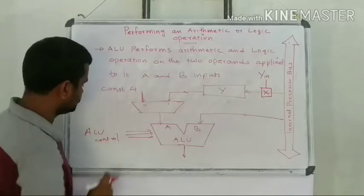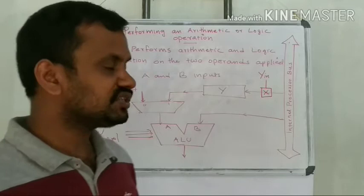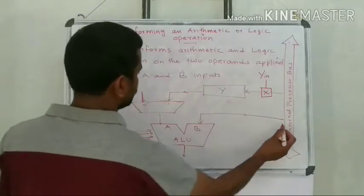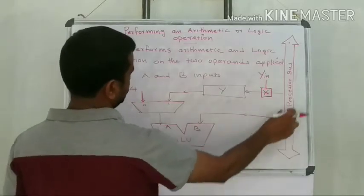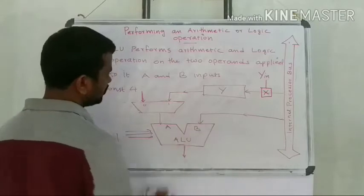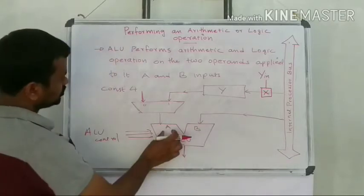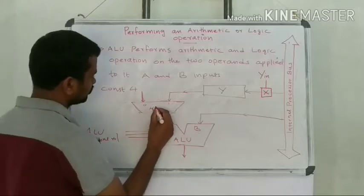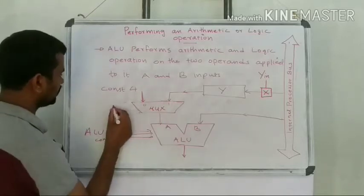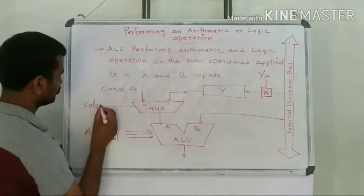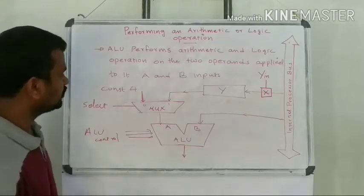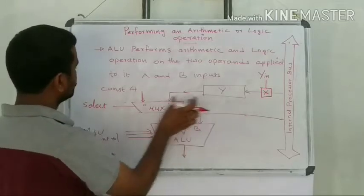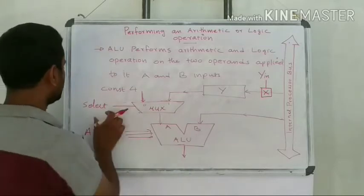The ALU control determines which operation is to be performed by the ALU. One input to the ALU comes from the internal processor bus and is given to the B input — that is always available. The other input, the A input, comes from a multiplexer. This A input will be either from the Y register or from constant 4, based on the select line.